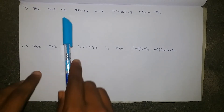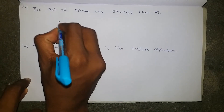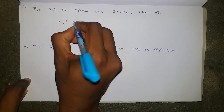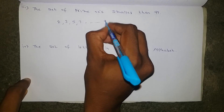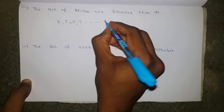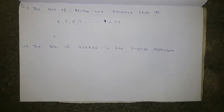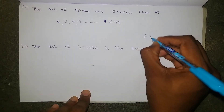Next one: the set of prime numbers smaller than 99. The prime number set is 2, 3, 5, 7 and so on, up to smaller than 99. Till 100 there are 25 prime numbers. So there is a fixed number of prime numbers, which means this will become a finite set.